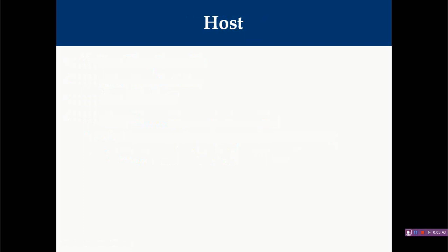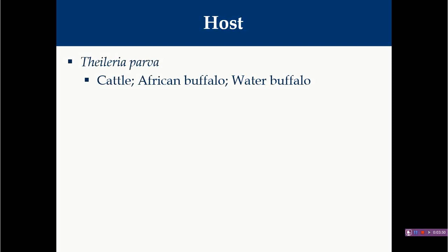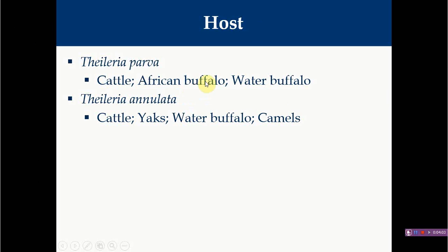Regarding hosts, for Theileria parva the hosts are cattle, African buffalo, and water buffalo, mainly seen in Africa. When buffalo transmit the disease to cattle, the term 'corridor disease' is used. For Theileria annulata, the main hosts are crossbred cattle, which are mainly susceptible for infections. Camels and yaks are also susceptible. Buffalo are considered a natural host for Theileria annulata but in the majority of cases they act as carriers.